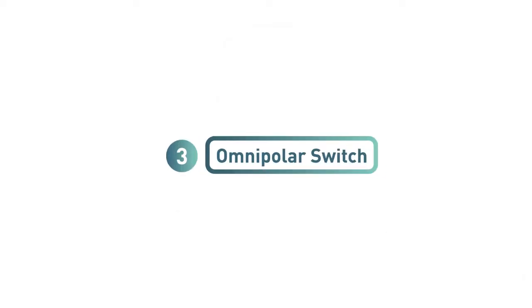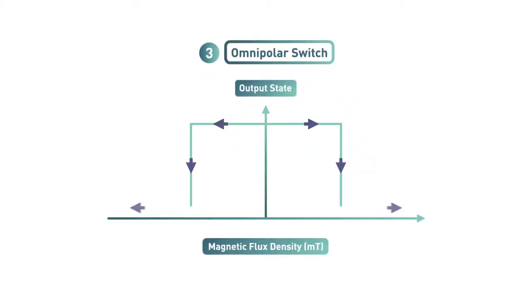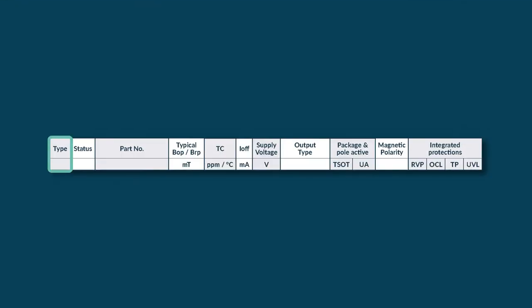The last group is the omnipolar switch, which has the same capabilities as a normal switch, but it can detect in both field spectrums at the same time. This is used for magnetic detection. The type column describes if the product is a latch or a switch.